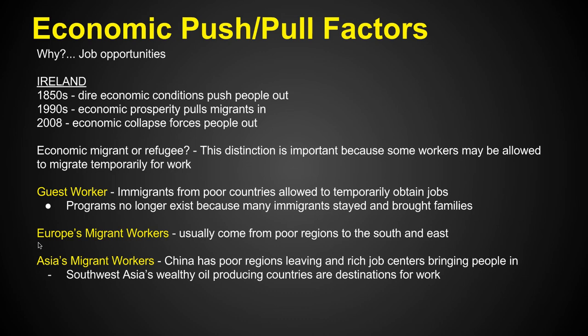Looking at Europe's migrant workers — the primary and secondary jobs in mines and factories typically come from the poorer regions of Europe in the south and east, where people don't have these opportunities, and even from the Middle East. For Asia's migrant workers, consider China: in the west there are very poor rural regions where people are migrating to job centers in the cities. In Southwest Asia, wealthy oil-producing countries have become major destinations for work, so many people are pouring in, and within Asia people are moving in and out across regions.